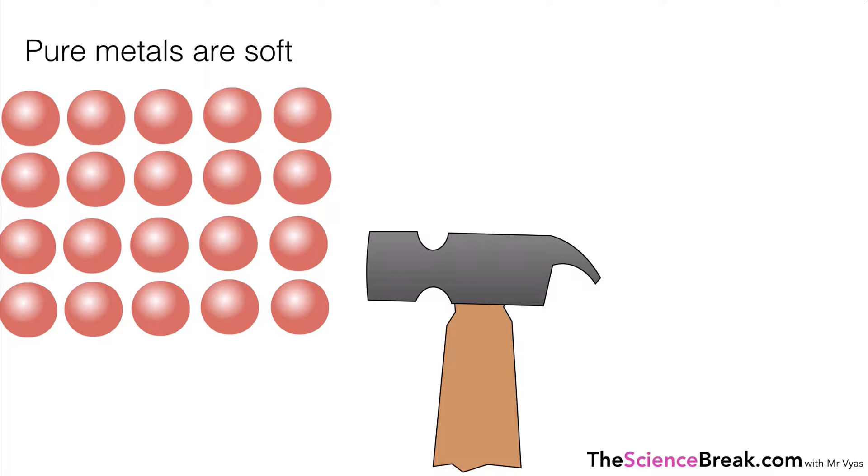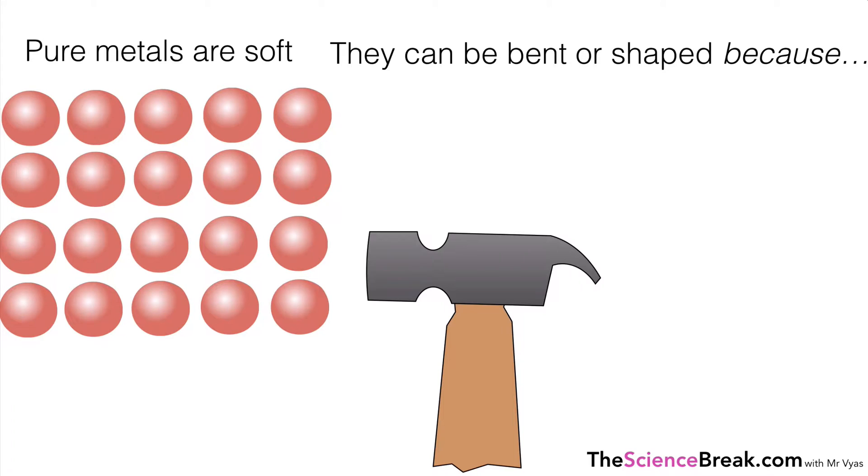Okay, so what we look at next is this idea of metals and their hardness or softness based on what they're like. So we have here pure metals are soft and they can be bent or shaped because the atoms are arranged in the layers and these layers can slide over each other.